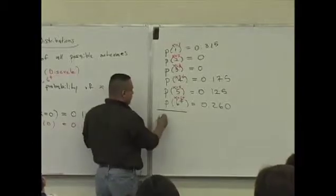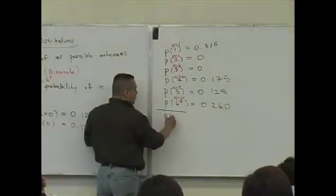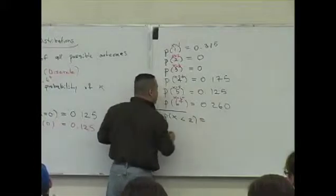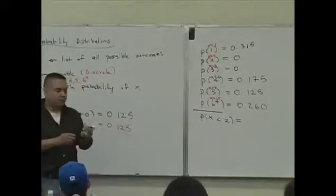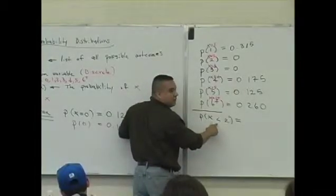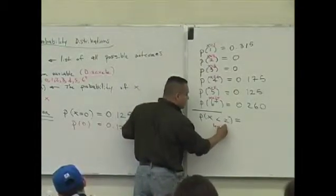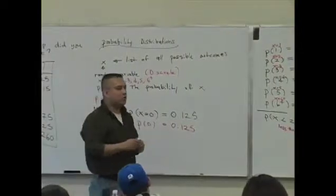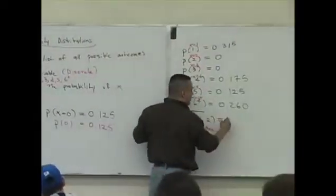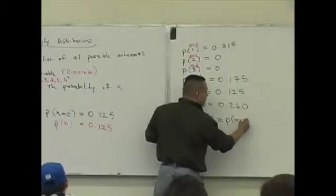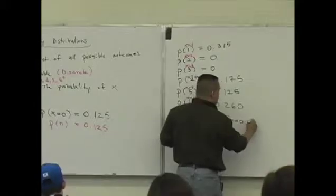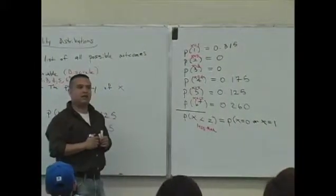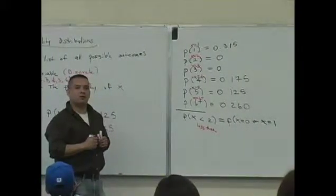Let's talk about some more notation. What does this mean? What do you think this means? This is the probability that x is what? Less than. Is that true? The probability that x is less than 2. So can you guys tell me which outcomes are less than 2? Is 0 less than 2? What else? Is 1 less than 2? What else? Is 2 less than 2? Is 3 less than 2?